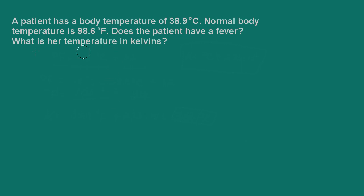A patient has a body temperature of 38.9 degrees Celsius. Normal body temperature in Fahrenheit is 98.6. Does the patient have a fever, and what is her temperature in Kelvin?